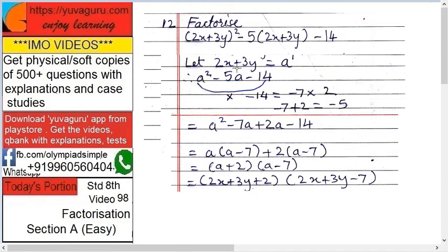Minus 14 times 1 is minus 14. It can be split as minus 7 times 2, since minus 7 plus 2 equals minus 5, which is the middle number. These two numbers satisfy the condition. So it becomes a squared minus 7a plus 2a minus 14. Take a common from the first two terms.